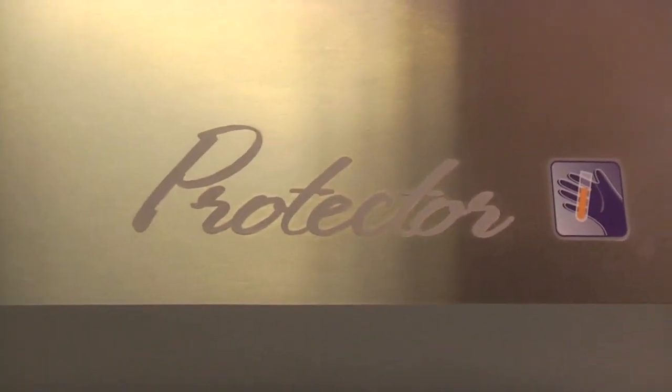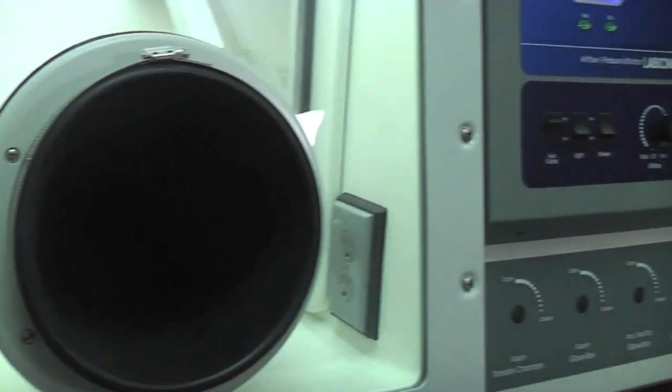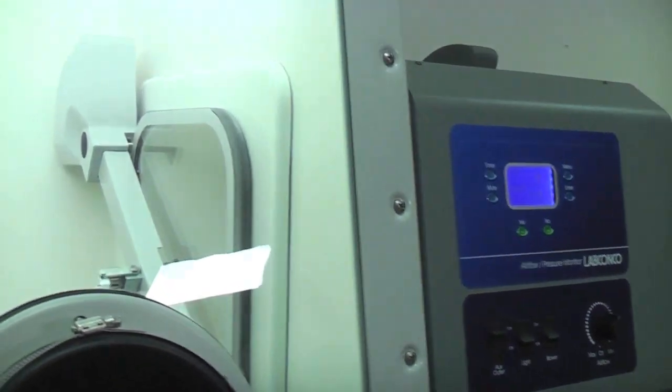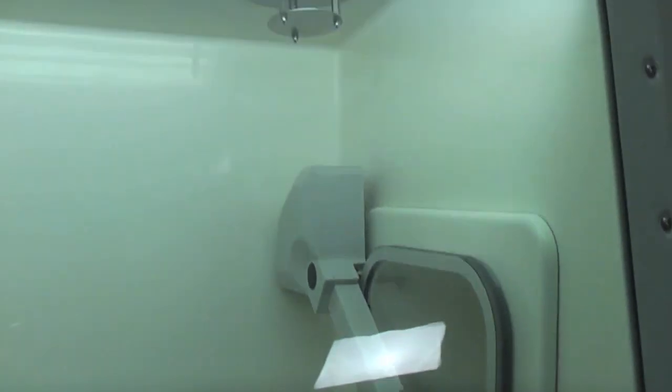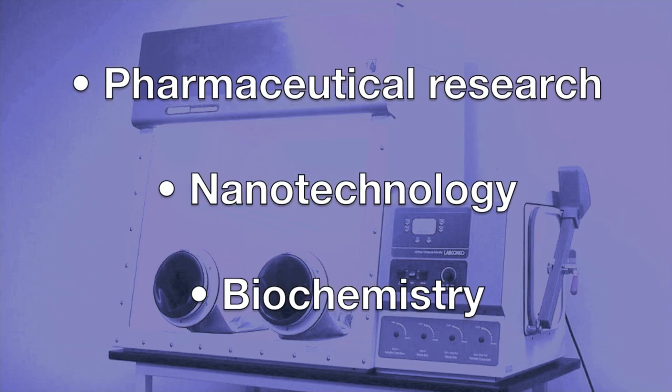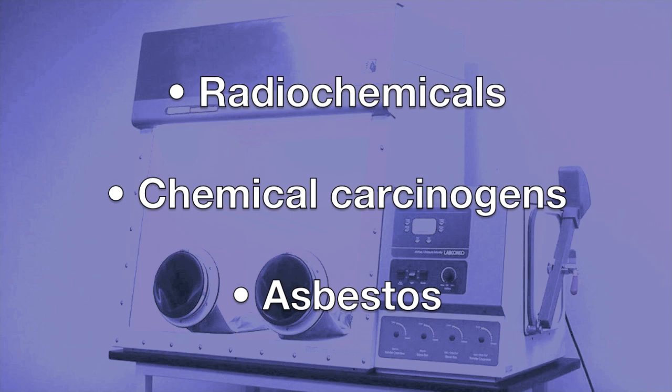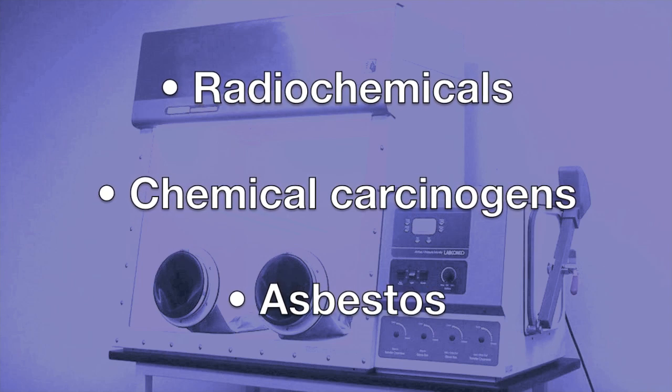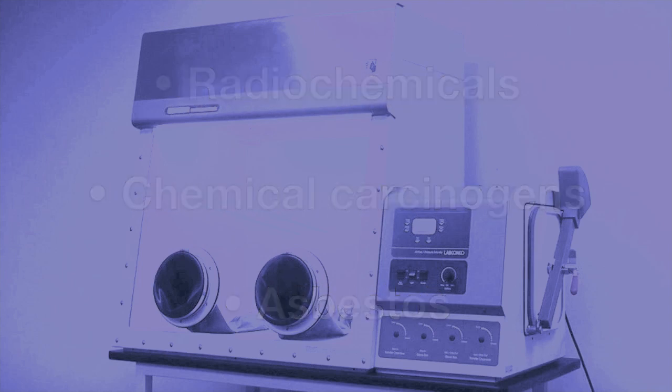Protector HEPA and ULPA filtered glove boxes have a broad application range due to their superior chemical resistance, leak-tight construction, and analytical balance stability. These glove boxes are ideal for pharmaceutical research, nanotechnology, and biochemistry, as well as operations that involve radiochemicals, chemical carcinogens, and asbestos.